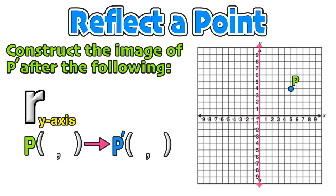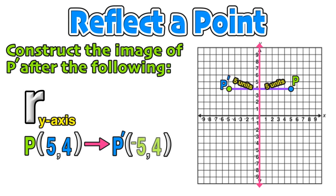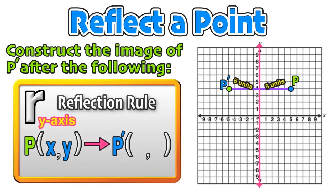Now we can take a look at taking that same point P and this time reflecting it over the y-axis. Our approach here is still the same — we are going to count how far away the point is from the line of symmetry, in this case 5 units. Then we can count the same amount of units on the other side of the line of reflection and plot the point P' at coordinates (negative 5, positive 4). Notice that when reflecting over the y-axis, the x-coordinate value is negated and the y-coordinate value is unchanged. So any point (x, y) becomes (negative x, y).